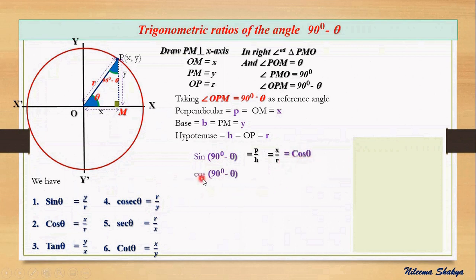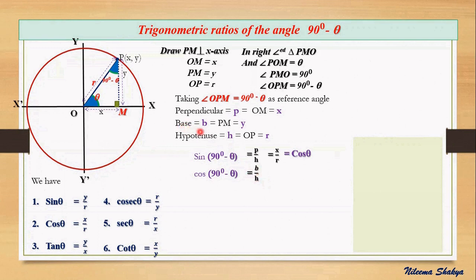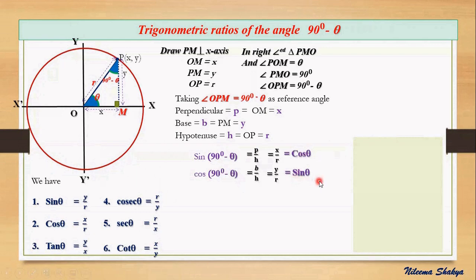Similarly, the second ratio: cos(90° − θ). For this reference angle, the cosine ratio is base by hypotenuse. The base is y and the hypotenuse is r, so cos(90° − θ) = y/r. Checking our previous work, y/r is the ratio sin theta, so cos(90° − θ) = sin θ.